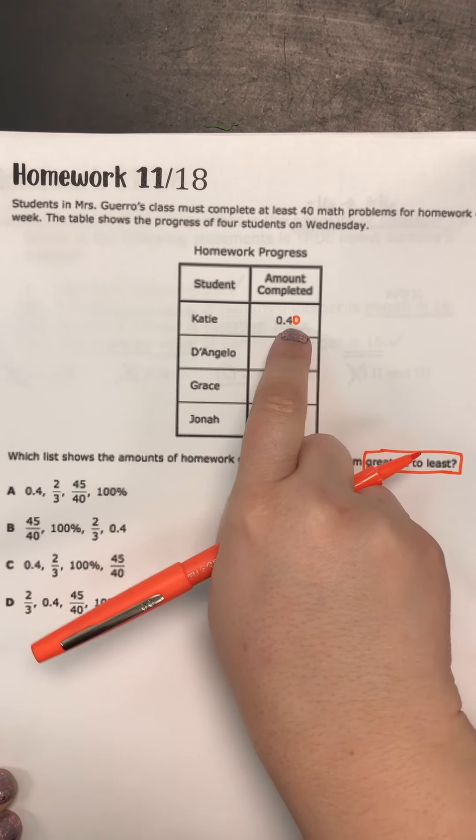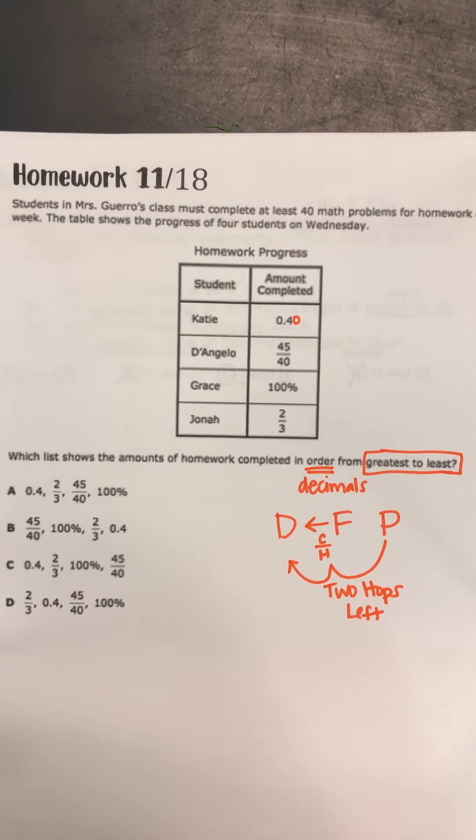So that first one is already a decimal, but I'm going to go ahead and put that zero behind it, so it looks like 40 cents.